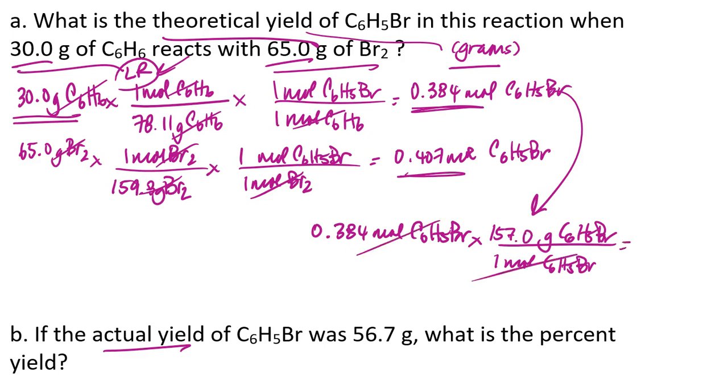If I do this math, I end up with 60.3 grams of the bromobenzene. Let me make that a little bit clearer. So this is what I should expect if the reaction went perfectly. So that is my theoretical yield.